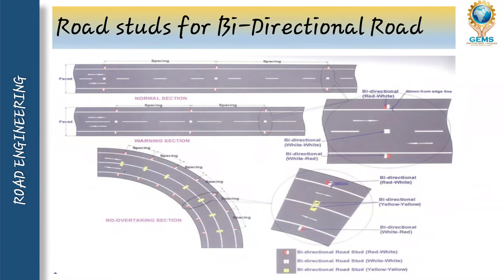As you can see, here are road studs for a bidirectional road with different colors and spacings shown. Red and white indicates bidirectional use, yellow and yellow also indicates bidirectional use, and white and red similarly shows bidirectional. These colors are used in different places — whether a normal section, wearing section, or overtaking section — and the colors indicate which type of section applies.